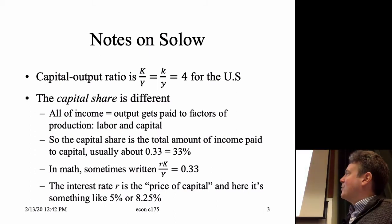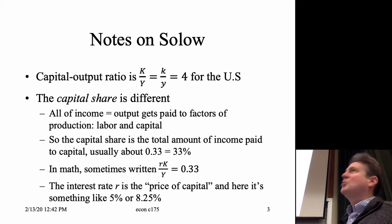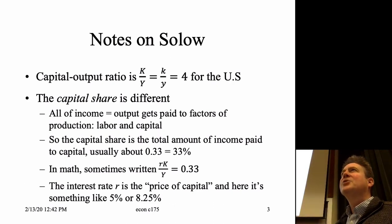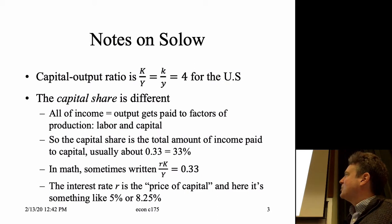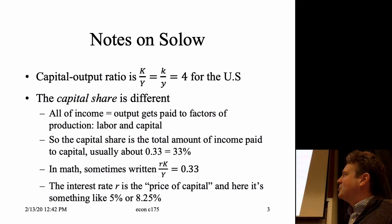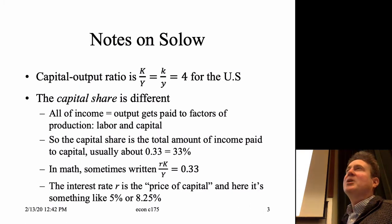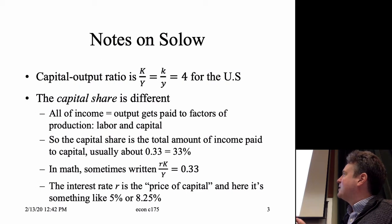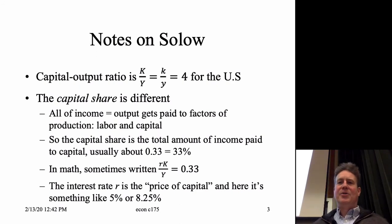The capital share is a number like one-third or 33 percent — it was 40 percent in lab three. It's also the exponent in the Cobb-Douglas production function. The gross interest rate — not net of depreciation — might be around 8.25 percent. So 8.25 times four gives you a number like 0.33. That's how all those fit together.